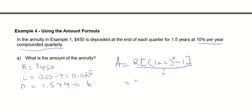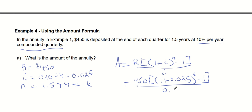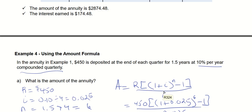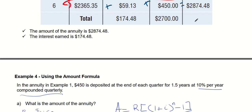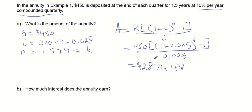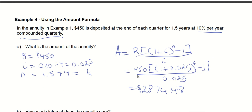Dropping in the numbers: 450 times bracket (1 plus 0.025) to the power of 6, minus 1, closed bracket, divided by 0.025. That gives us $2,874.48, which is the same number as the table result. So you can do this using a table or using just a formula - either works.